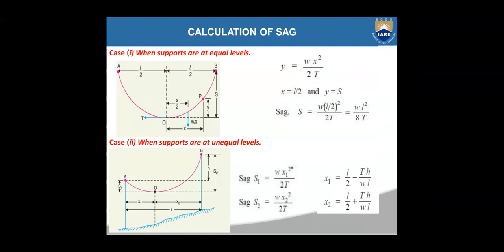When the supports are not at equal levels, you will have two sags S1 and S2. Those two sags are calculated using S1 = wx1²/2T and S2 = wx2²/2T. Here x1 is the distance from support A to the center of the conductor O, and x2 is the distance from support B to O. x1 and x2 can be calculated as x1 = L/2 − Th/wL and x2 = L/2 + Th/wL.